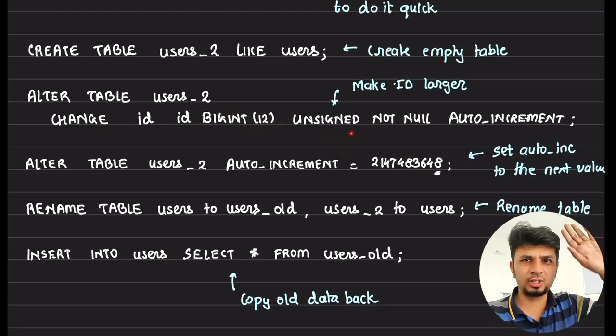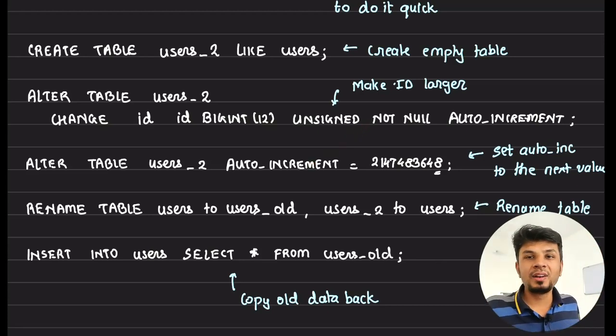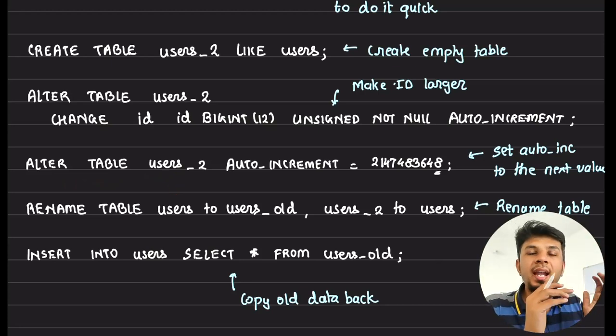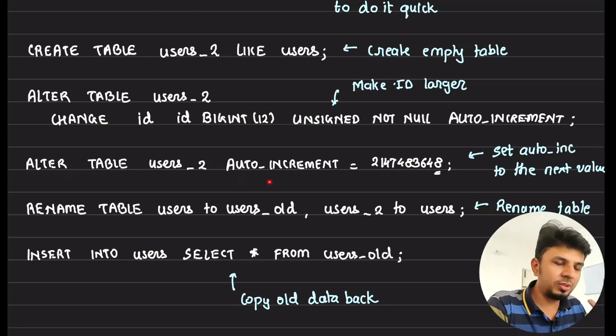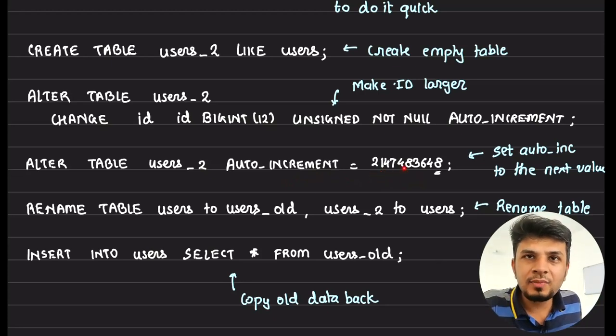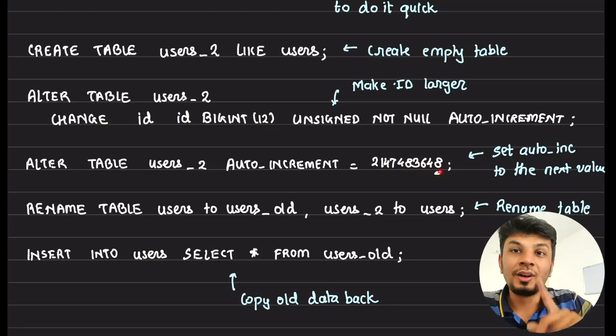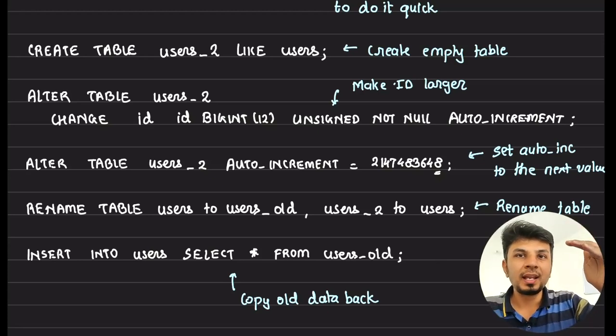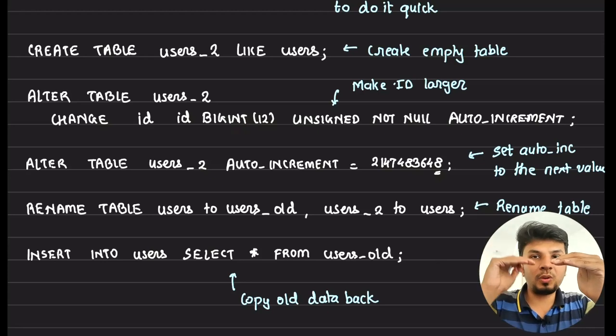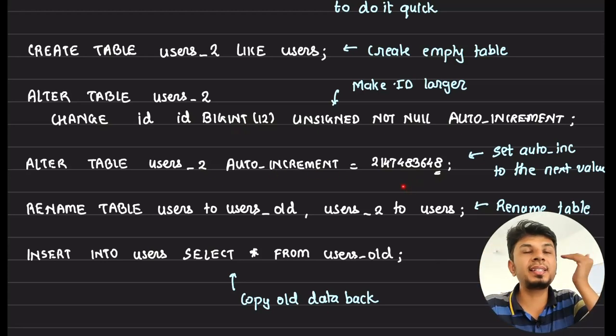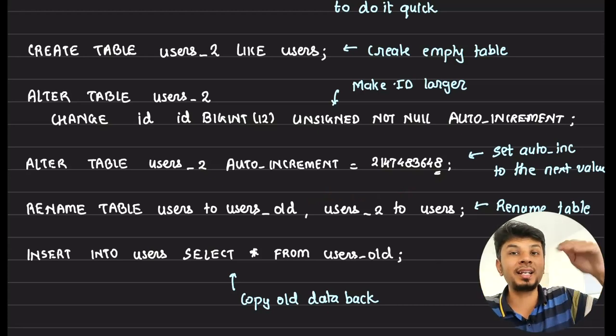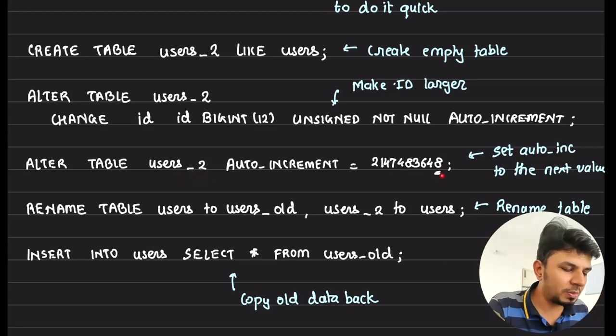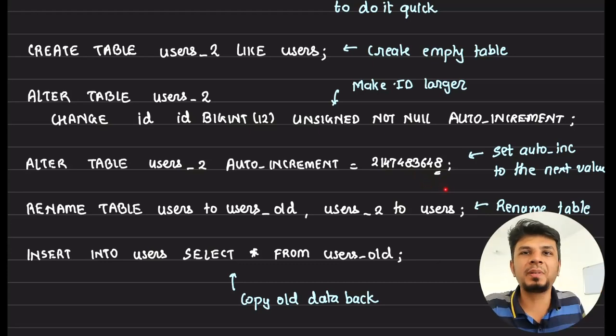And then what we do is we alter the table users_2. So now users_2 has the same schema as users, but has a bigger integer. Now what we do is we alter the table users_2 and set auto-increment to 2,147,483,648. Not 47, but 48. Because 47 was where it was the limit of signed integer. But now that it is a big integer, we can just have one next integer. So this is like setting the counter, setting the sequence generator. Like the auto-increment sequence to the big value that it was not able to insert before. So now when a new row is added into this table users_2 table, it will start from this particular ID. Because now it's possible to add it. So it will start from this particular ID.